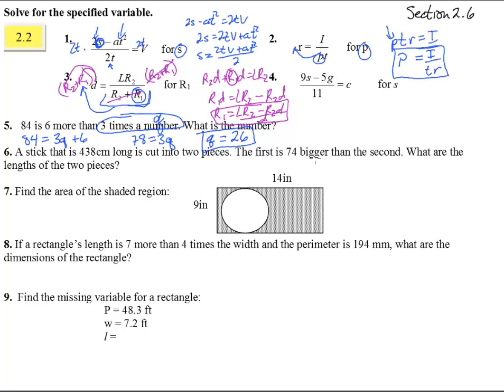A stick that is 438 centimeters long. So let's draw this out. We have a big long stick here. 438 centimeters. It's cut into two pieces. Let's chop it right here. The first piece, this first piece, is 74 bigger than the second. So if this is the second piece and this is the first, first equals the second plus 74.